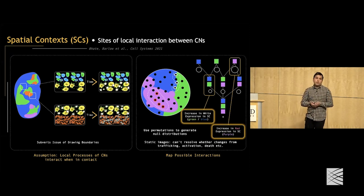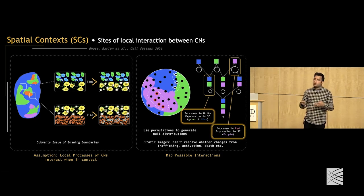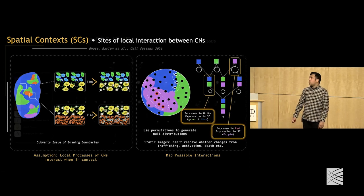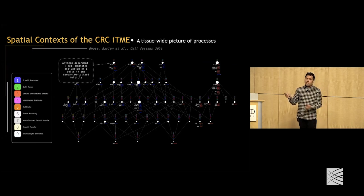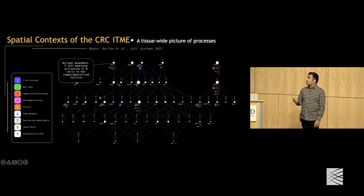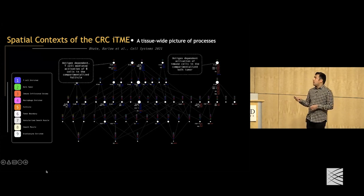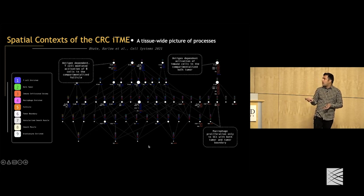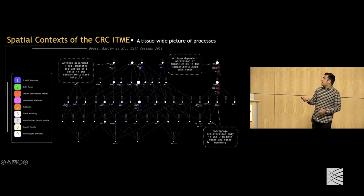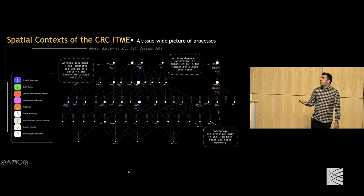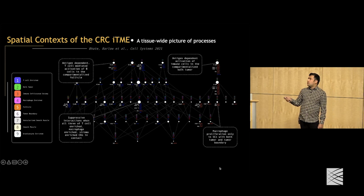To infer what interactions occur in these spatial contexts, if we see an enrichment of a specific phenotype in a specific spatial context, that implies some kind of interaction. We use permutations to generate null distributions and quantify statistically the extent of this enrichment. Since we're working with static images, we can't resolve whether changes in cellular phenotypes are from trafficking, activation, proliferation, or death.